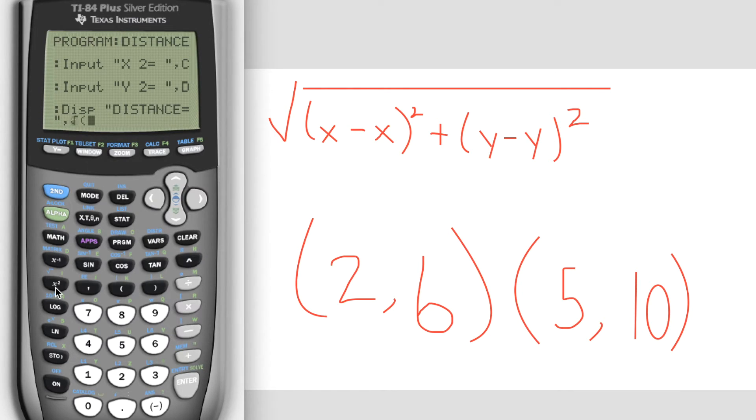So we're going to hit second X squared to pull up our radical. Then we're going to hit the parentheses. Now this is going to be representative of X1, X2, Y1, and Y2. So we're going to put A minus C parentheses X squared plus B minus D parentheses squared, and then end the radical because you started it and I have to end it. Hopefully you can see where our A, B, D, and C came from. Then click enter again.